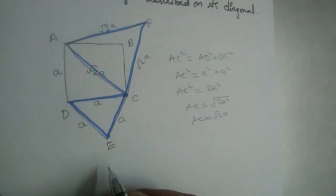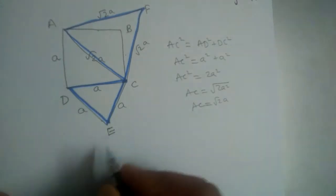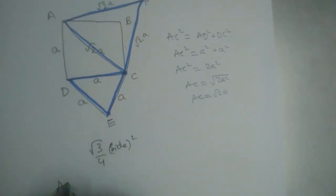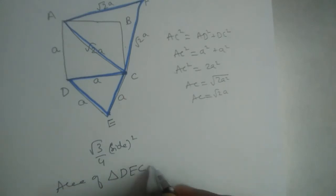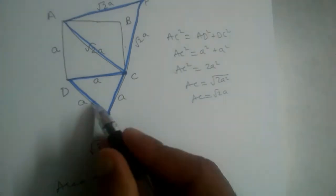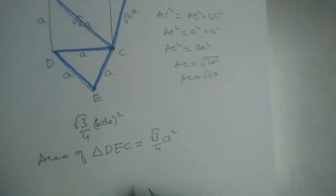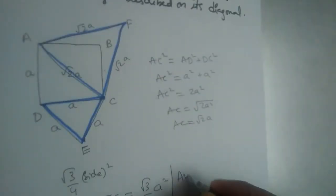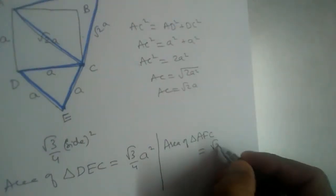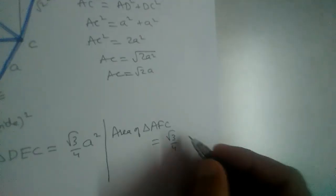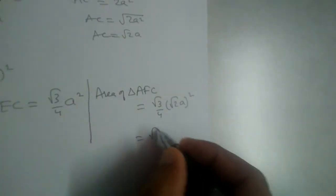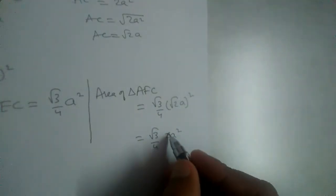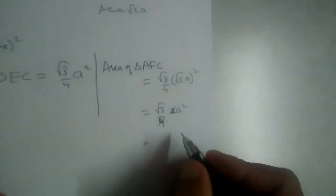Let us find the areas of these two triangles. We know that the area of an equilateral triangle = (√3/4) × side². Area of triangle DEC = (√3/4) × A². Now, area of triangle AFC = (√3/4) × side², where the side is √2·A. So this gives us (√3/4) × (√2·A)² = (√3/4) × 2A². Let us not simplify further to make the substitution clearer.